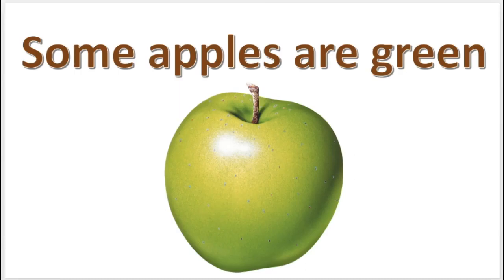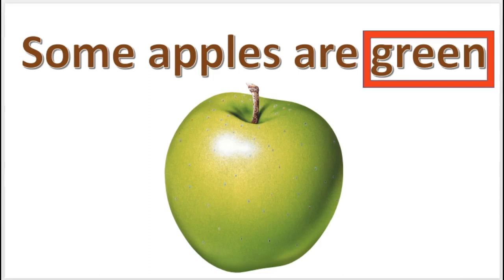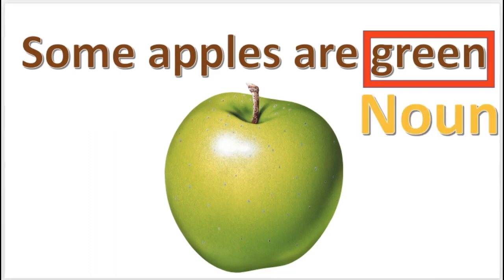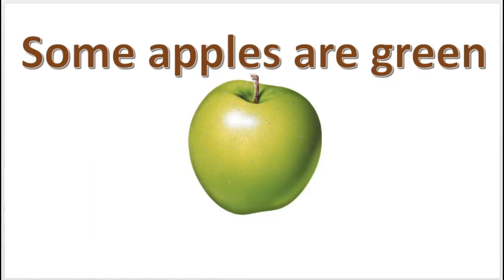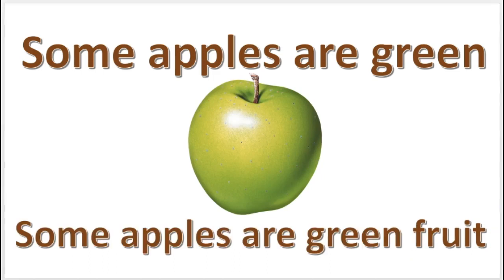For example, the proposition 'some apples are green' has no noun in the predicate term. The word 'green' refers to an attribute, not a class. So we need a noun to refer to the predicate class. To translate this proposition, we enter a noun into the predicate — for example, the word 'fruit.'